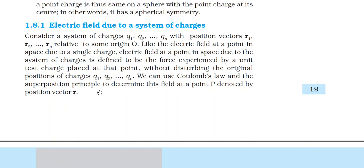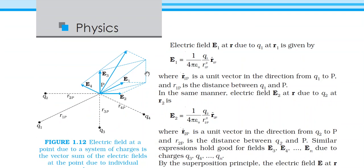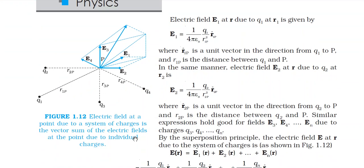We can use Coulomb's law and the superposition principle to determine this field at a point P denoted by position vector R. The point where we need to find the electric field is called P, and its position vector is denoted R vector. As stated, we must apply Coulomb's law and the principle of superposition. This is shown in figure 1.12. The electric field at a point due to a system of charges is the vector sum of the electric fields at the point due to the individual charges. For the chosen point P, the net total electric field due to the system of n charges is found by calculating the electric field of each charge and taking the vector sum. As you can see, Q1's electric field is E1.